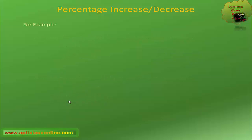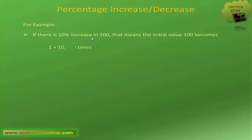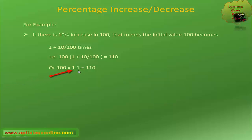By applying these formulas, for example, if there is 10 percent increase in 100, that means the initial value 100 becomes 100 into 1 plus 10 divided by 100, that is 110. So 100 multiplied by 1.1 directly gives 110. We can use this for any other value — if there is 10 percent increase, the increased value can be achieved by multiplying 1.1 with the initial value.